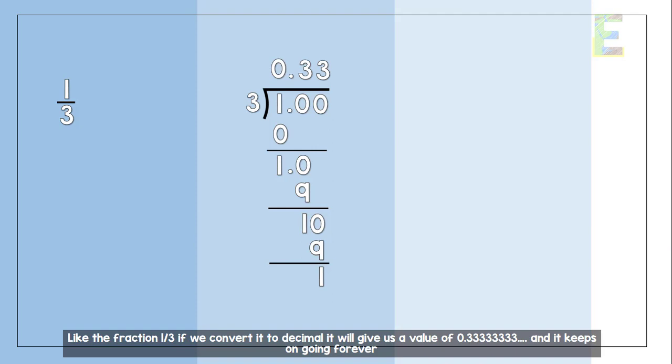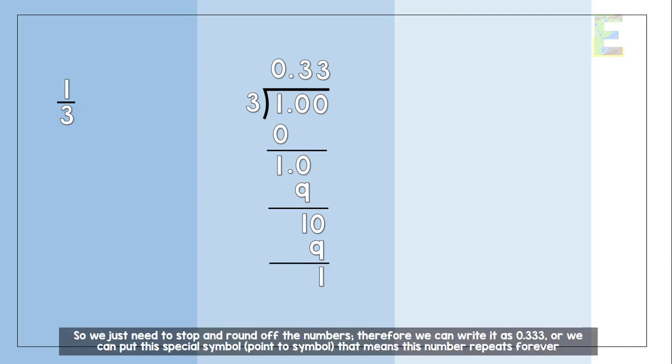If we convert it into decimal, it will give us a value of 0.333333333 and it keeps on going forever. So, we just need to stop and round off the numbers. Therefore, we can write it as 0.33333 or we can put this special symbol that means this number repeats forever.